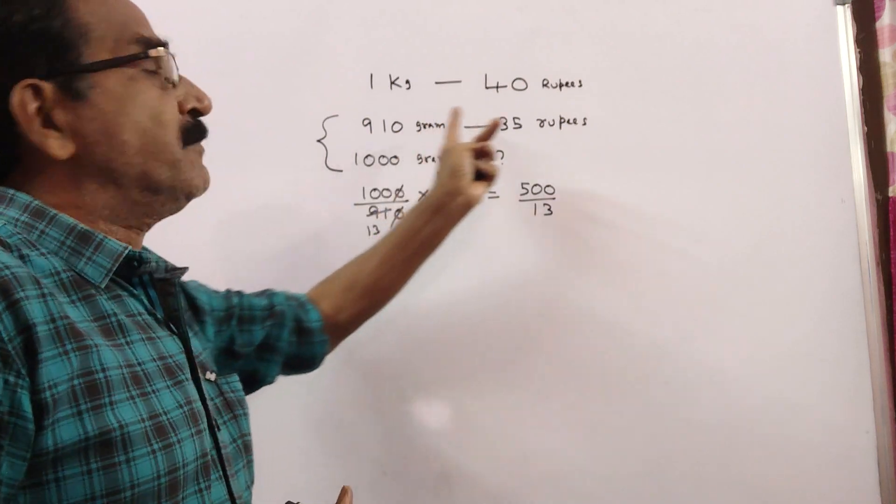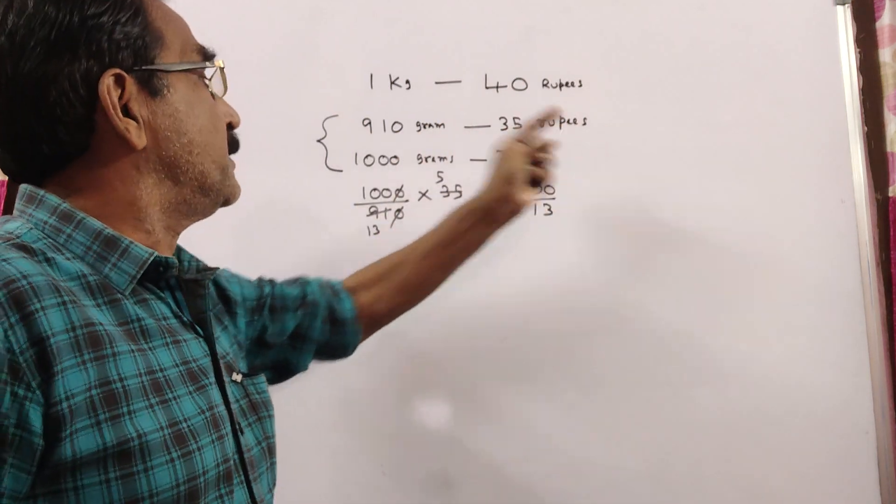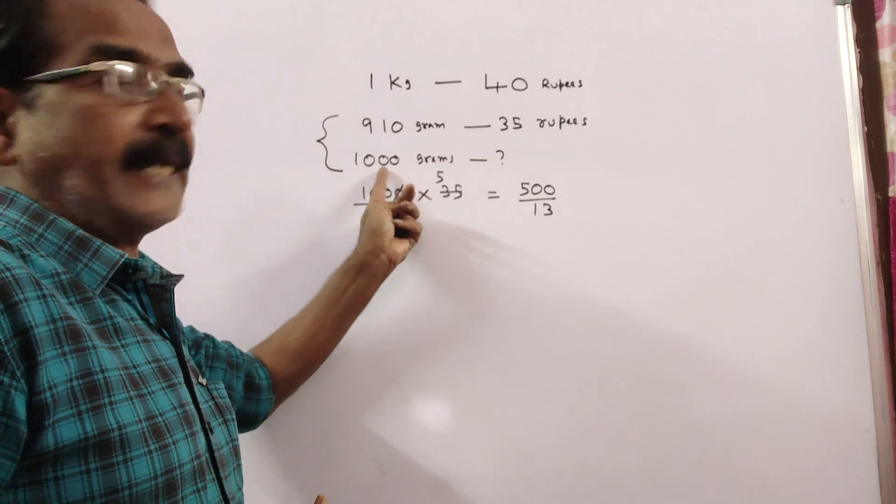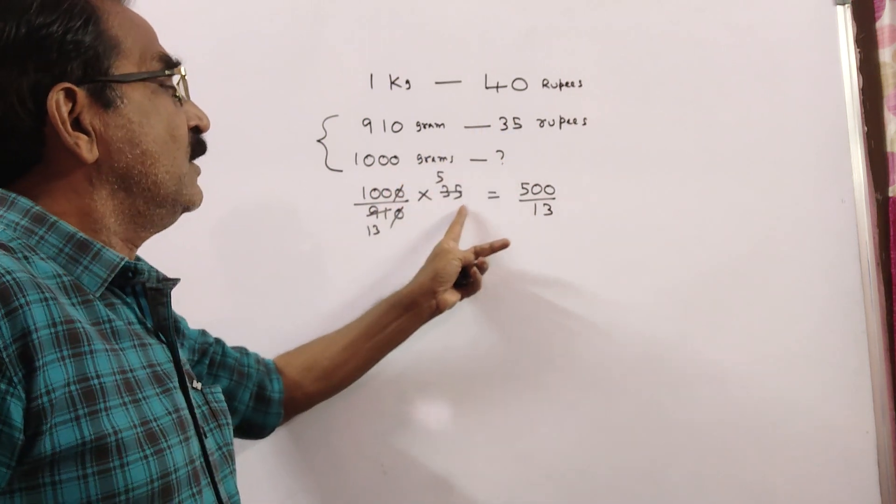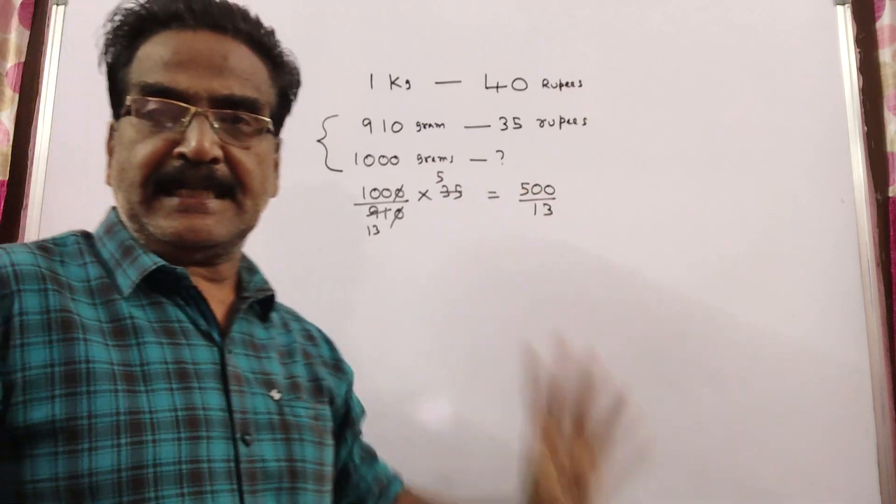910 grams per 35 rupees means what is the price of 1000 grams. So, 1000 by 910 into 35, that comes to 500 by 13.